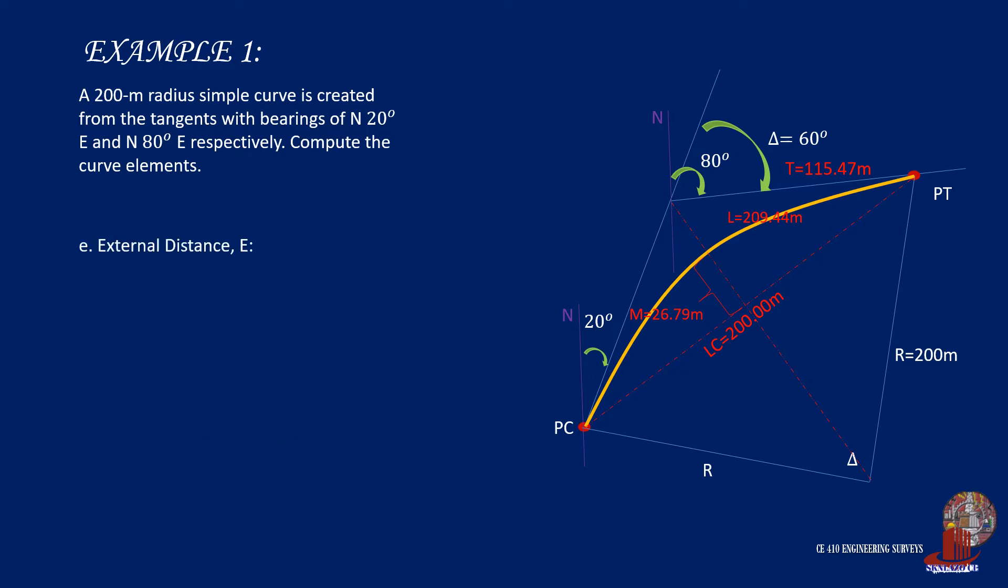The last element is the external distance E. The formula as derived is r times the quantity secant of delta over 2 minus 1. And again, by placing the values of r and delta, we get 30.94 meters.